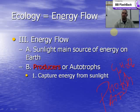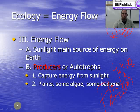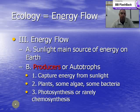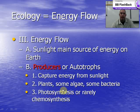That ATP is used to make C6H12O6 — simple sugars. Once those simple sugars are made, we get plants, and organisms start eating those plants. Most plants are producers or autotrophic organisms and sit at the bottom of our pyramid.